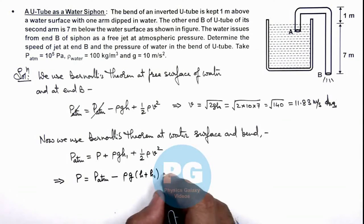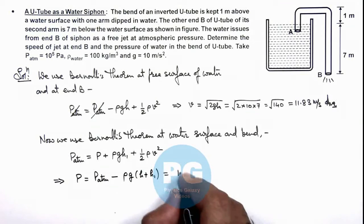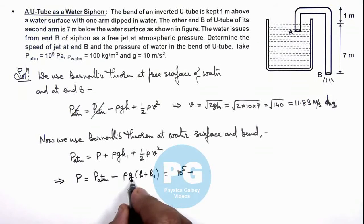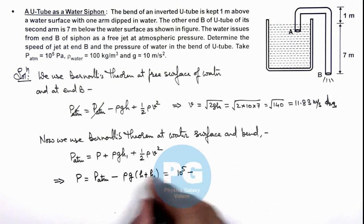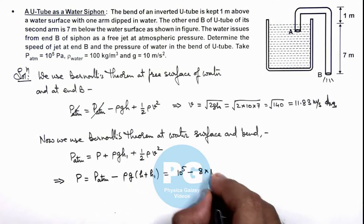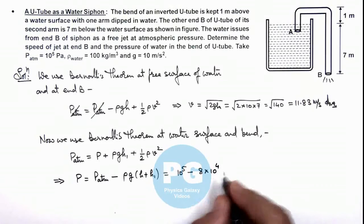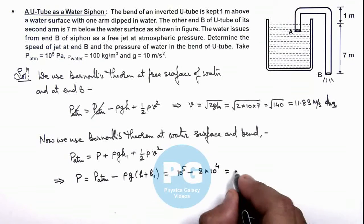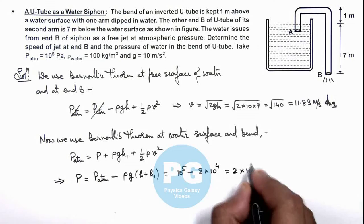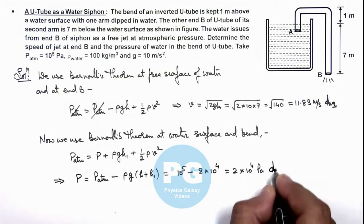If we substitute the values, this is 10⁵ minus ρ is 1000, g is 10, so this will be (7 + 1) = 8 into 10⁴. So this will numerically be giving us 2×10⁴ Pascals. That is the result of this problem.